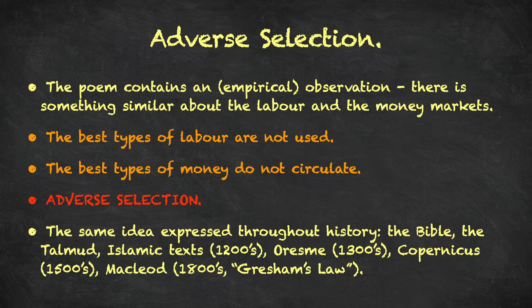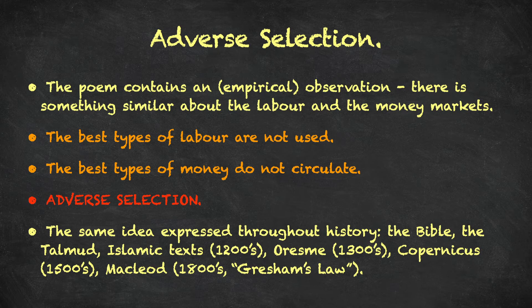Adverse selection: we're going to think of a market mechanism in our study. The market is going to select who gets employed and who doesn't, what types of money circulate and what types do not. The 'adverse' part of adverse selection essentially means it's choosing the wrong types — it's choosing the low-quality types over the high-quality types. So we're going to call this intuitive idea adverse selection.